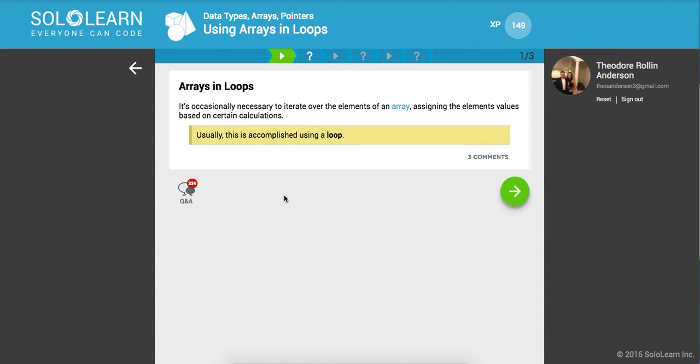So, arrays and loops. It's occasionally necessary to iterate to go through the elements of an array, assigning the element values based on certain calculations. Say we wanted to print out the even numbers, the odd numbers, or just build out a manual count up until a certain index. Usually, this is accomplished using a loop, a way to iterate or go through the values in our data structure.